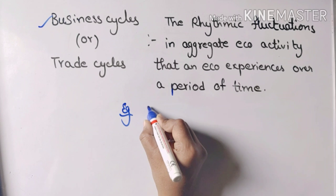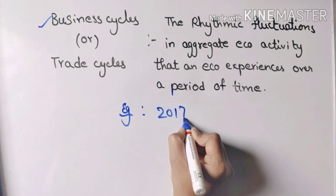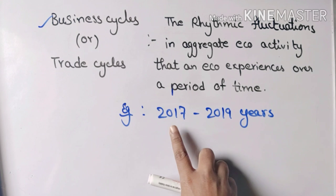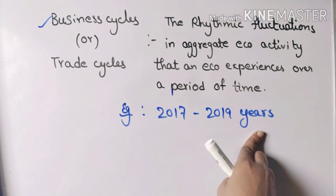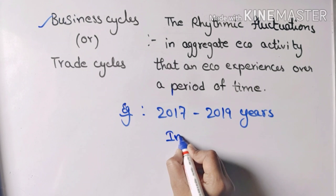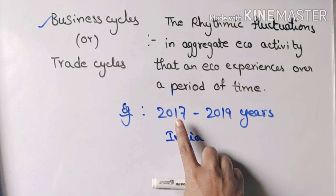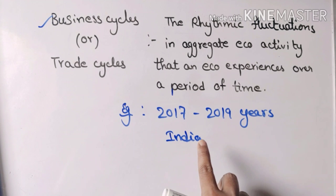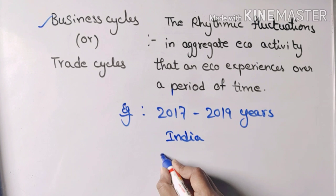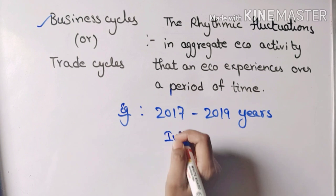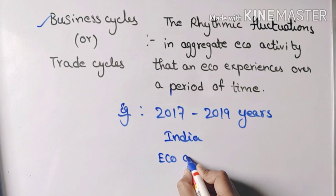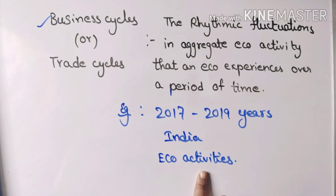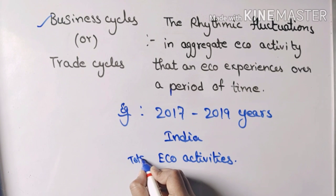For example, in the years 2017 and 2019, the economy — meaning India's economic activities — experiences profit. But profit here means change, not always a gain. Economic activities overall means a change — profit or loss in total activities.